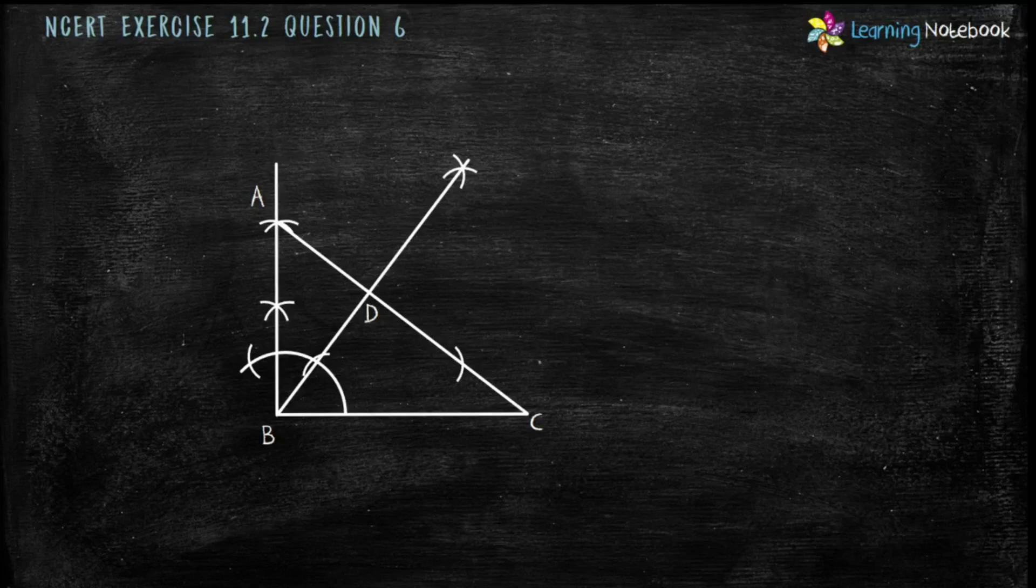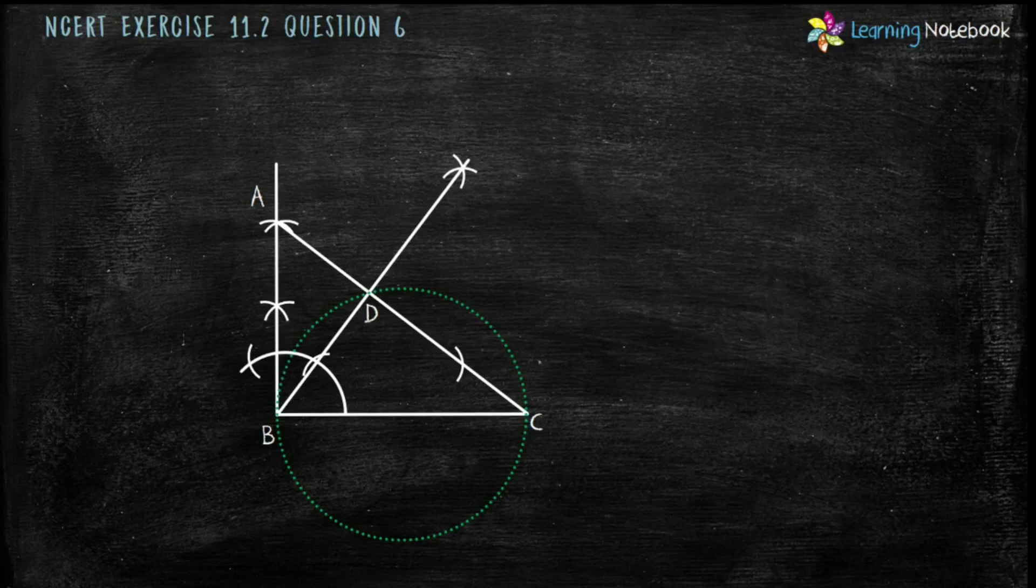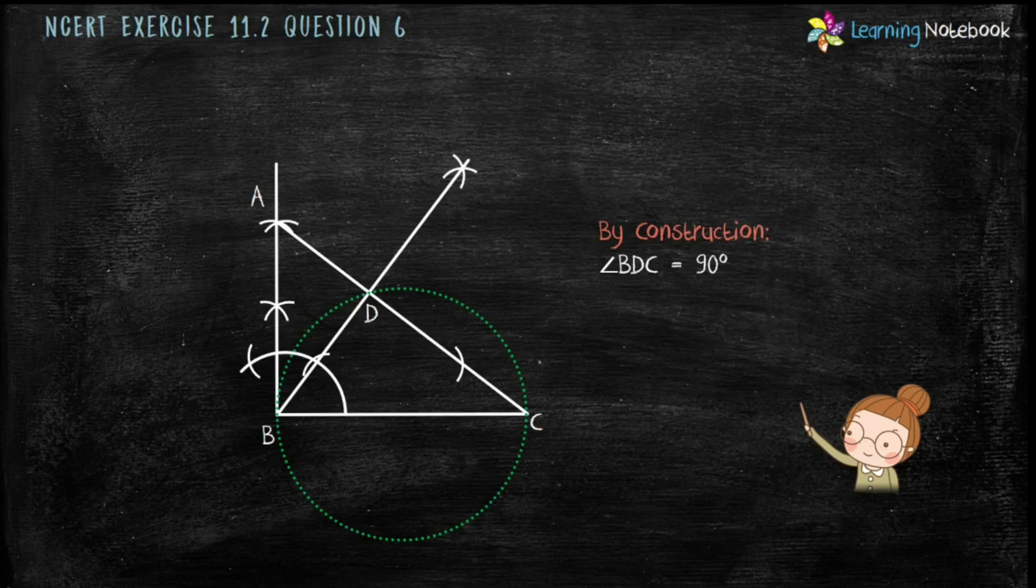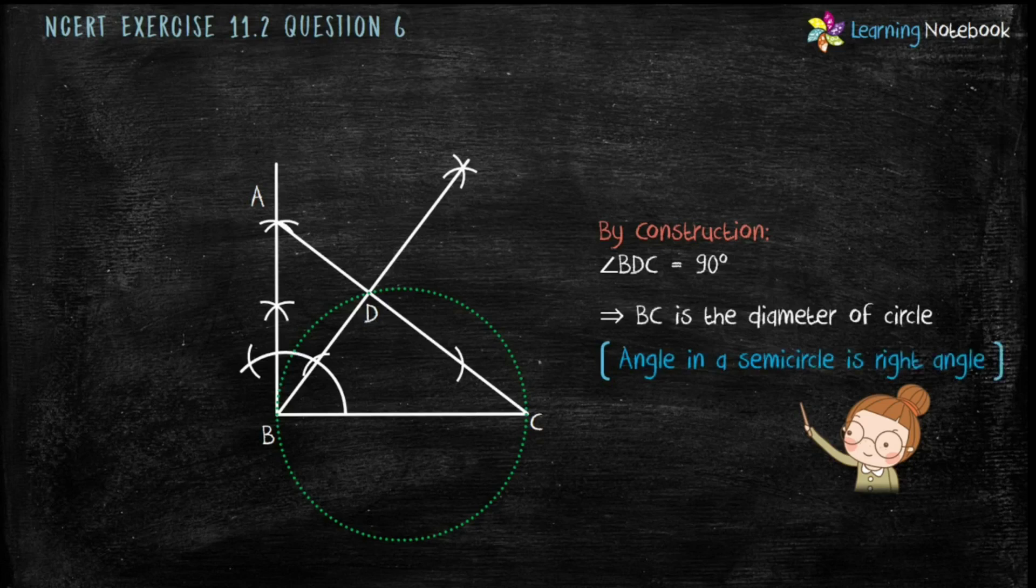Now let's understand what to do next here. We have to construct a circle which passes through points B, C, D. By construction we know angle BDC equals to 90 degrees. This means BC is the diameter of the circle. Because we know angle in a semicircle is right angle. Now students we need to find the midpoint of BC which will be the center of the circle passing through B, C, D.